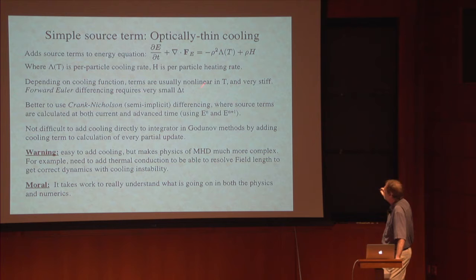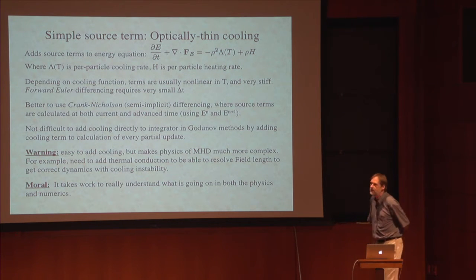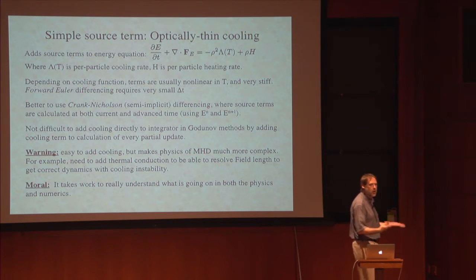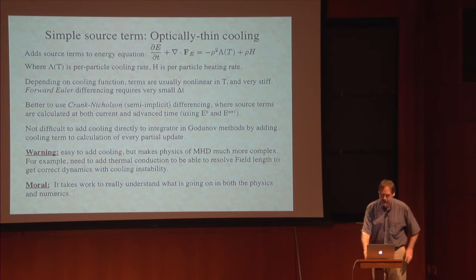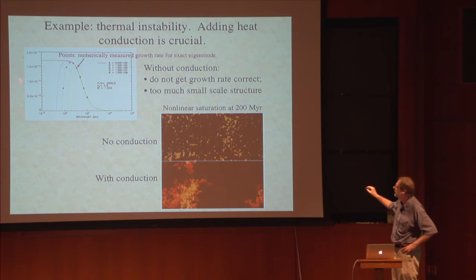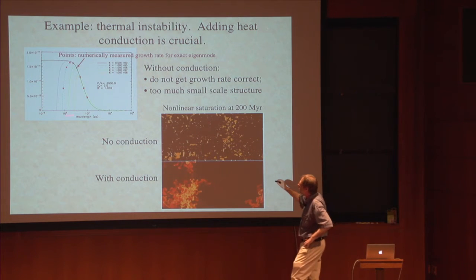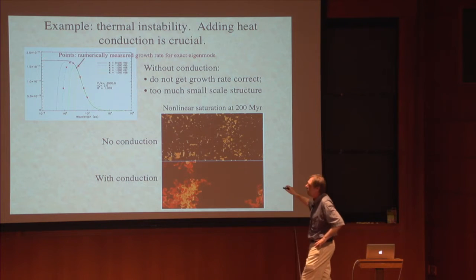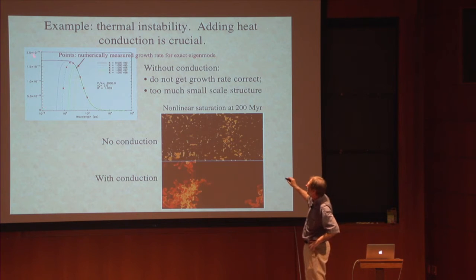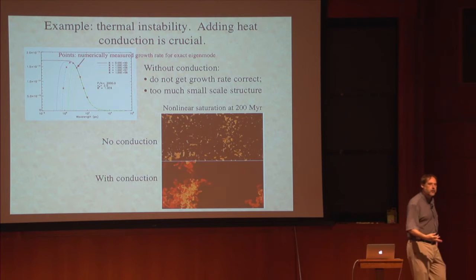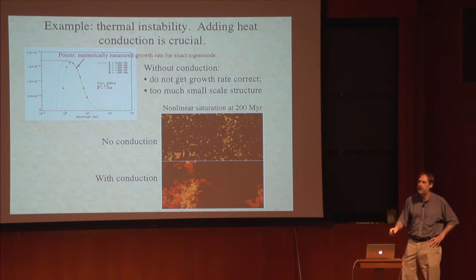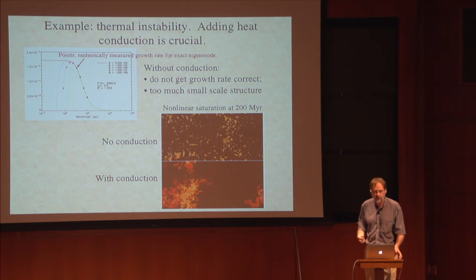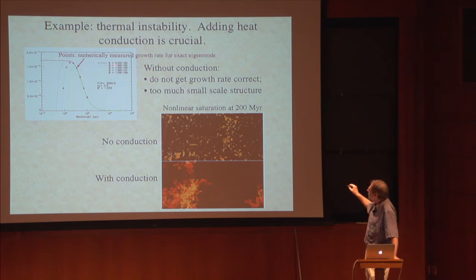It's easy to add this term, but it makes the physics much more complex. For example, in the interstellar medium, a typical cooling curve introduces thermal instability — two phases, a cool dense phase and a hot rarefied phase that can coexist at the same pressure. The dispersion relation shows that the growth rate for the thermal instability is highest at the shortest wavelengths — meaning at the grid scale that's where the fastest growing modes exist, so any truncation error will excite the thermal instability and give you all kinds of grid-scale structure that's not physical.